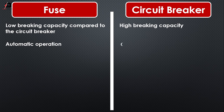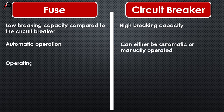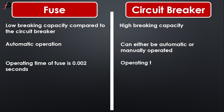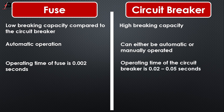A fuse has automatic operation, whereas a circuit breaker can either be automatic or manually operated. The operating time of a fuse is 0.002 seconds, while the operating time of a circuit breaker is 0.02 to 0.05 seconds. A fuse is low cost, whereas a circuit breaker is high cost.